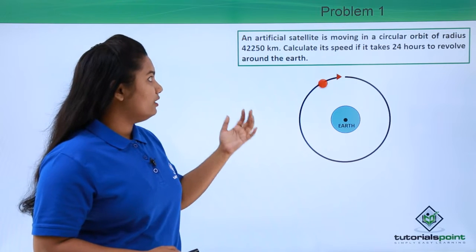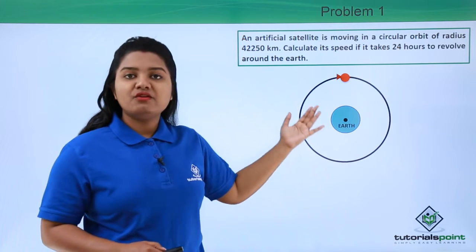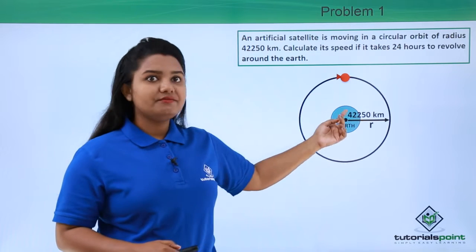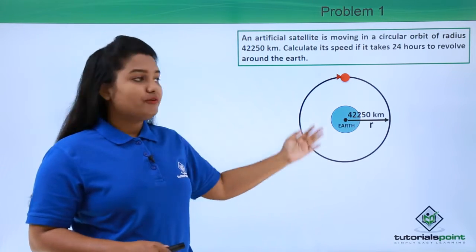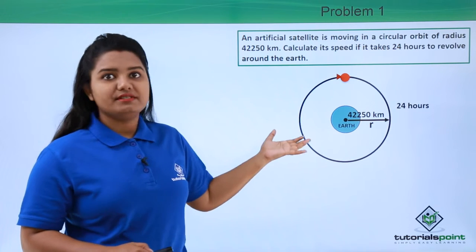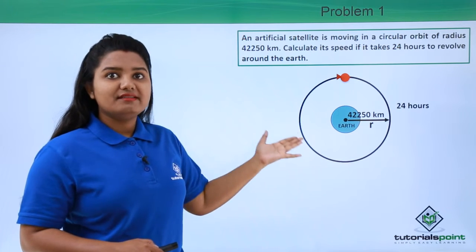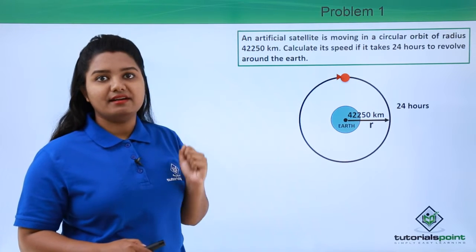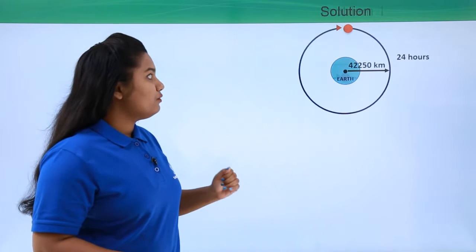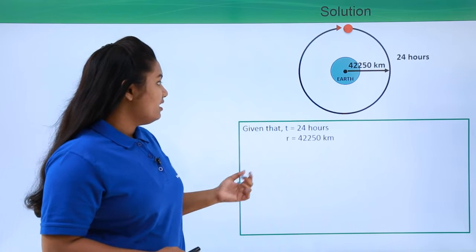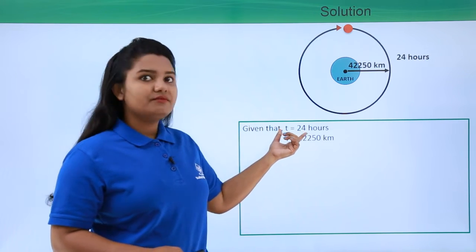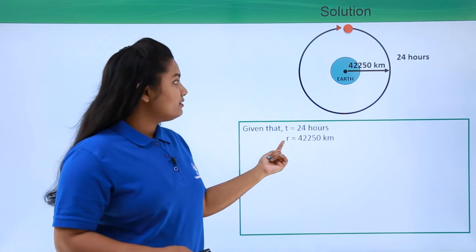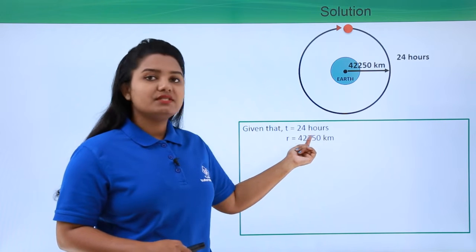The question says that an artificial satellite is revolving around the earth in a certain circular orbit. The radius of that orbit is given to be 42,250 kilometers, and for one revolution it takes 24 hours. We need to find out the speed at which this satellite is revolving. Let us first list down what is given: the time taken for one revolution is 24 hours, and the radius of the circular path is 42,250 kilometers.